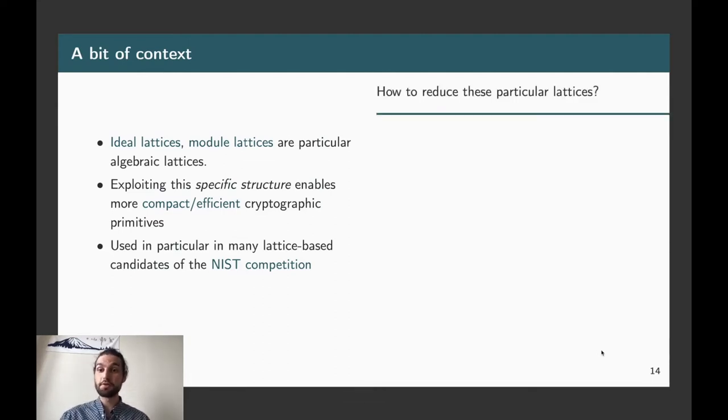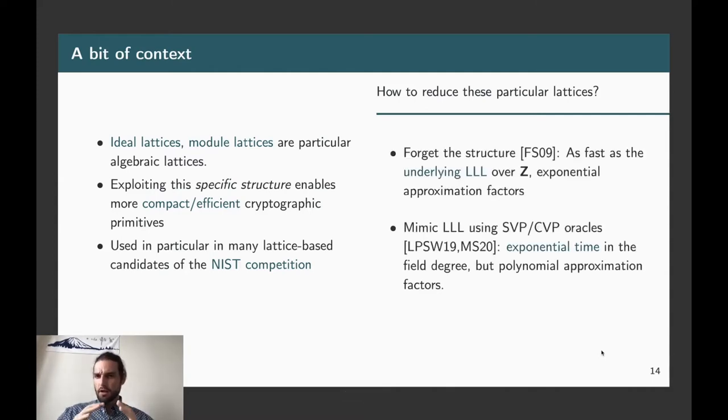So, now the question is how do we reduce this particular lattice to find short vectors and be able to give security estimations for the primitives. So, a very simple idea would say, okay, so if I take an algebraic lattice, basically I can always descend the full lattice over the integers Z and get a bigger lattice, a bigger integral lattice, which has the same geometrical properties. So this corresponds to completely forget the algebraic structure and only keep the metric structure which is underlying. And if you want to reduce that using LLL, basically the resulting algorithm is as fast as the LLL algorithm you would use over Z. And it gives exponential approximation factors. So, the first work in this direction was done by Fieker and Stehlé in 09. But it's a bit sad because you have a very structured object, so a module lattice, an ideal lattice, an algebraic lattice, but you are completely forgetting all of the algebraic properties.